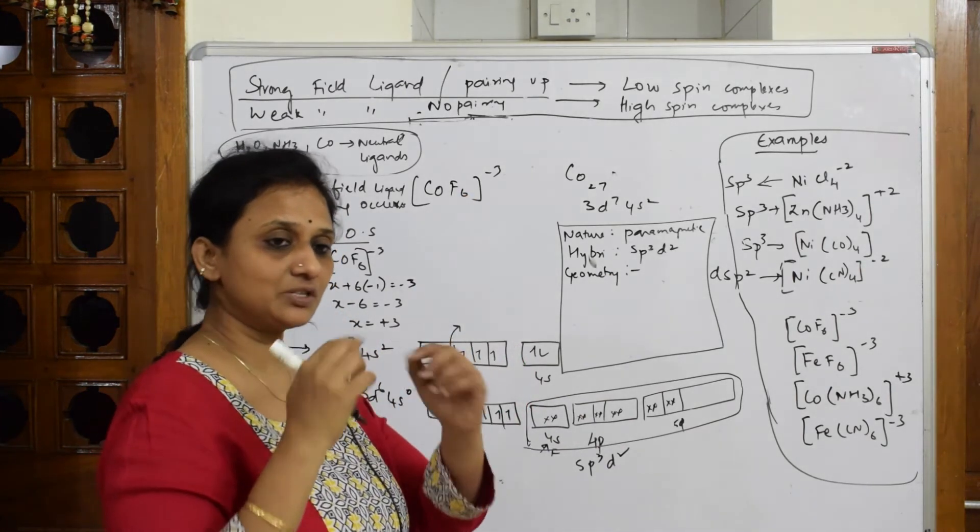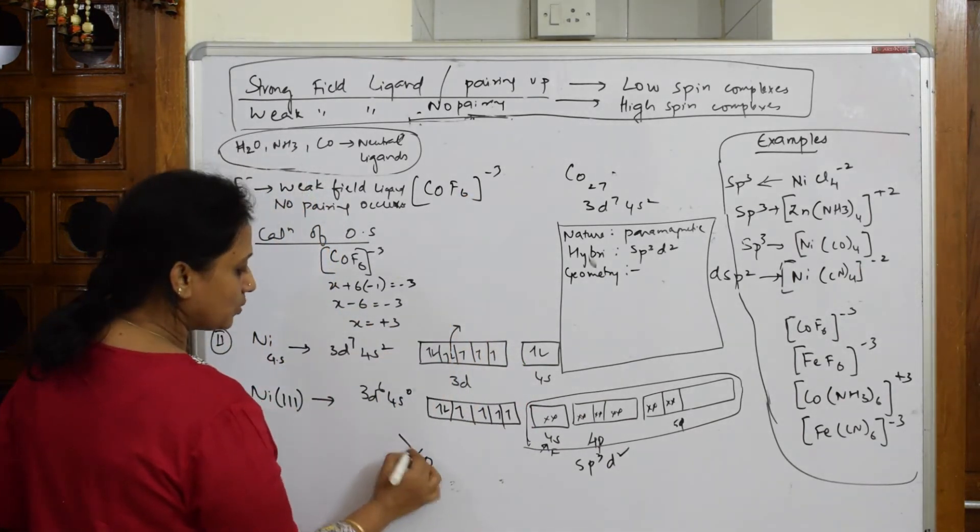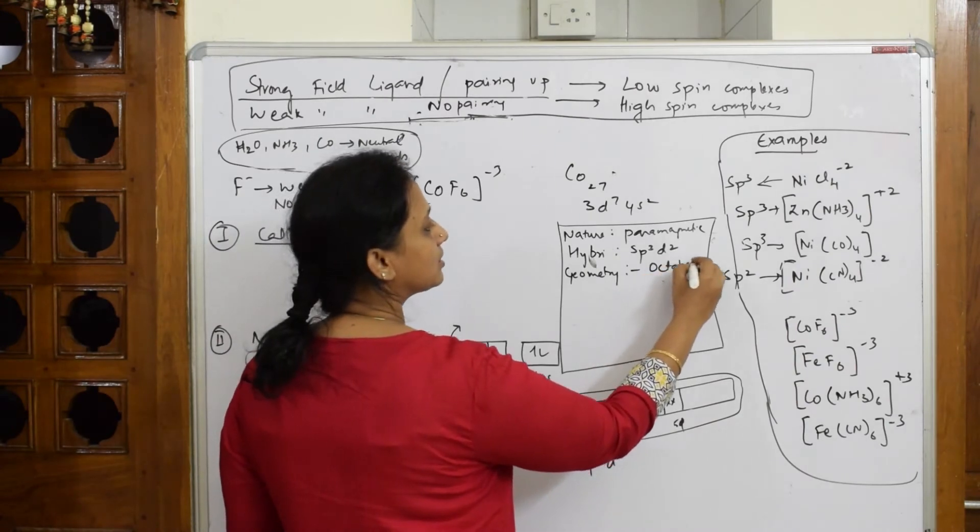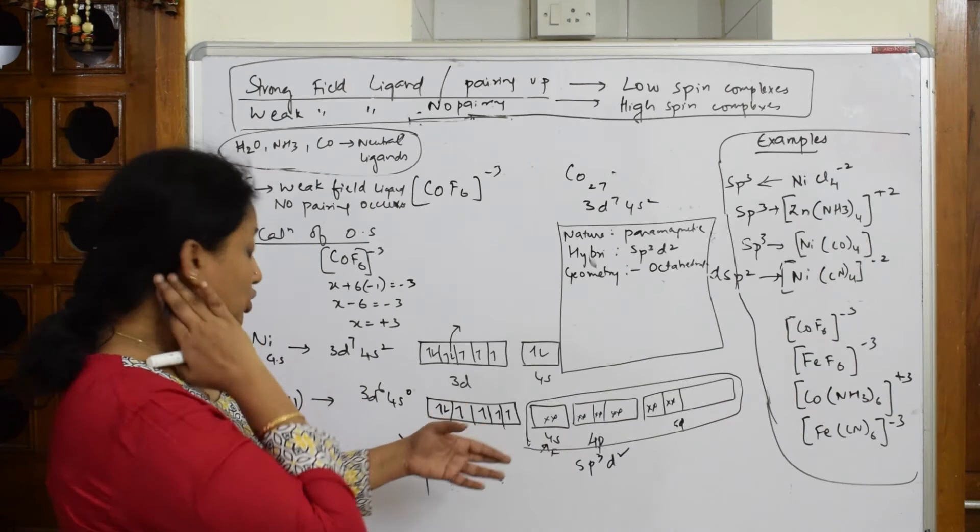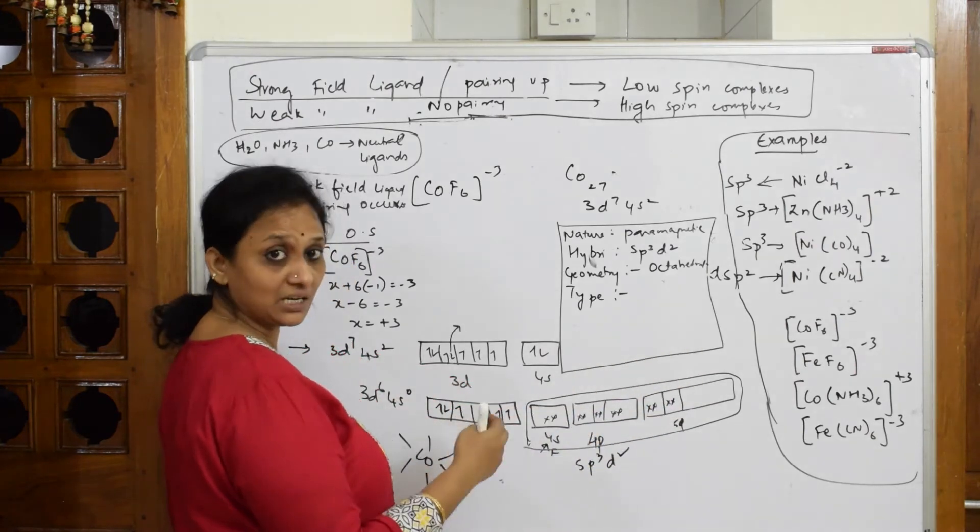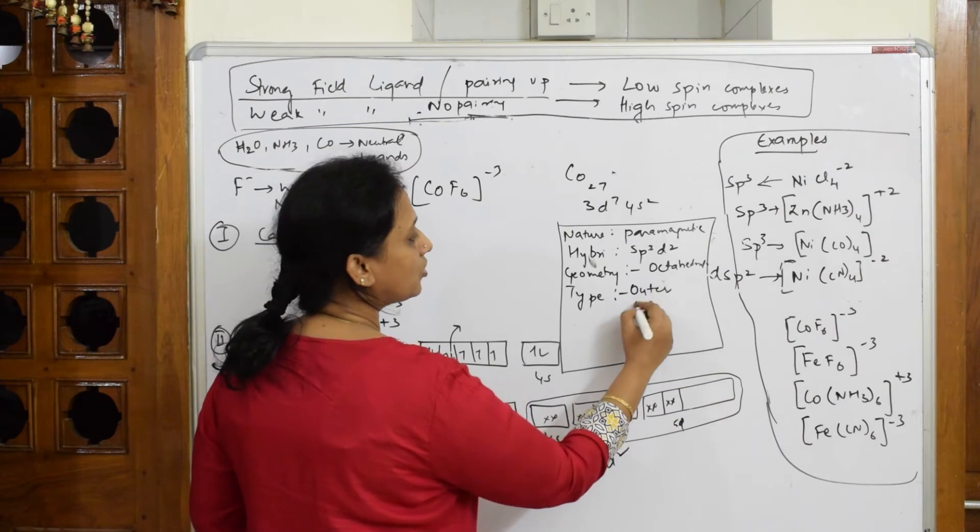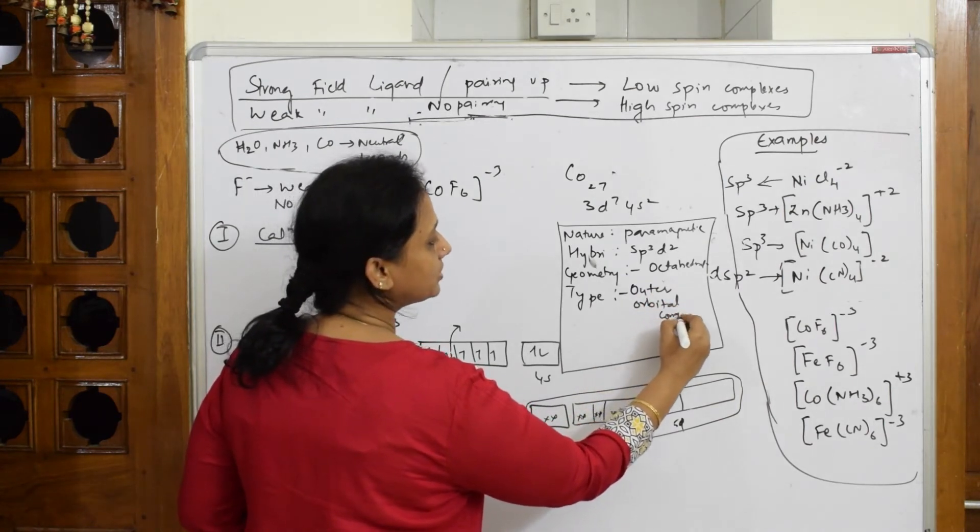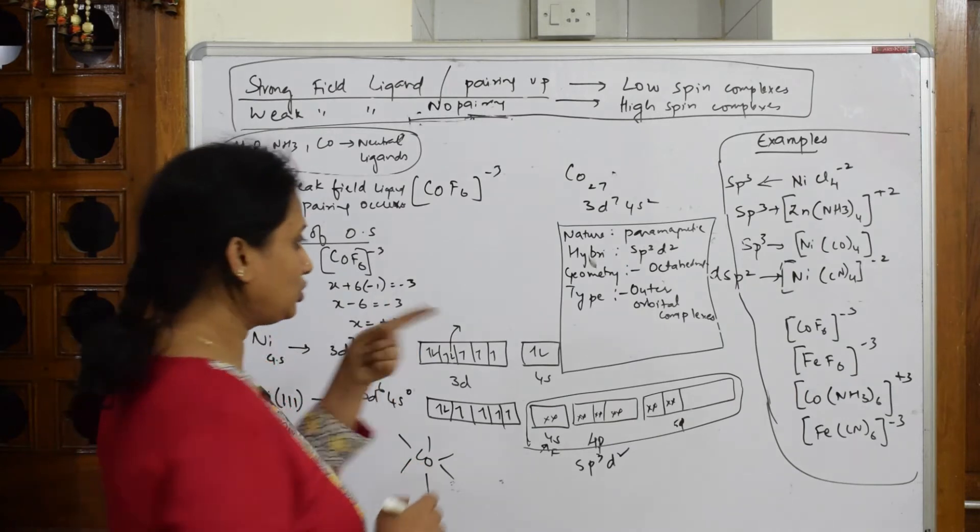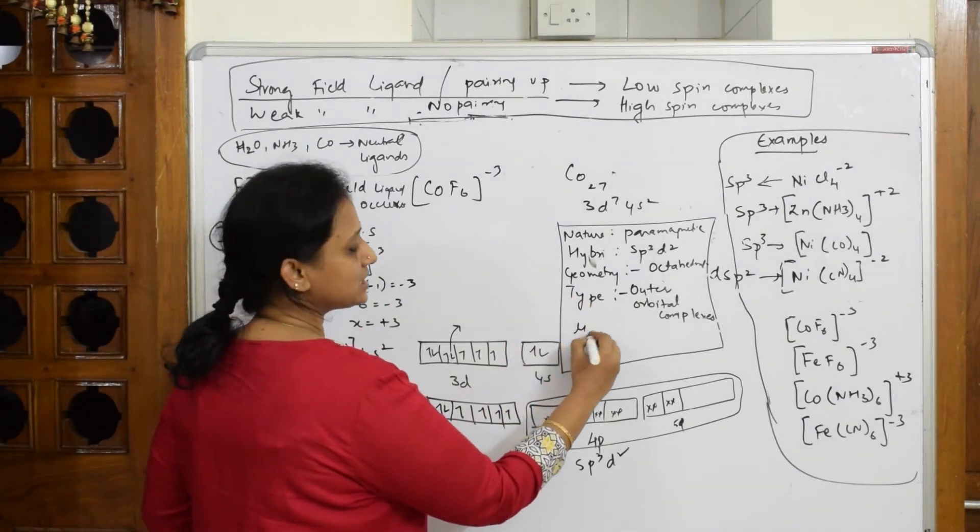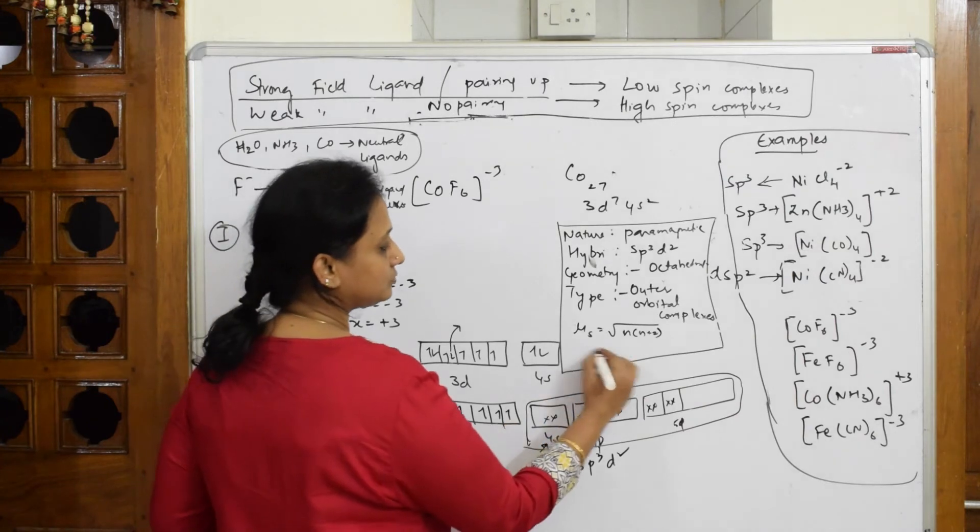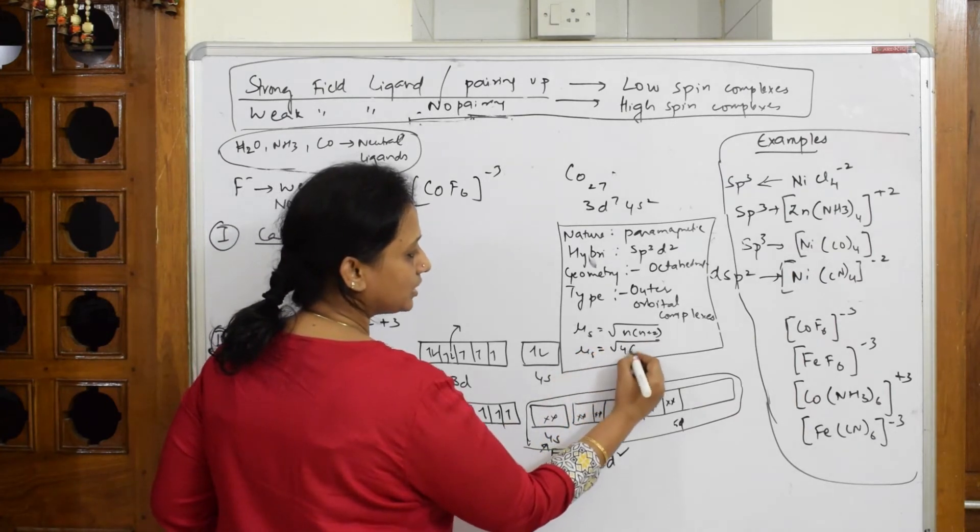Next important thing: what is the geometry? How many ligands are there? Six ligands. Six means all six corners, like 1, 2, 3, 4, 5, 6. What is this shape? Octahedral. So geometry is octahedral. Next important thing: type - inner orbital or outer orbital complexes. It's going out, isn't it? It's not coming and pairing up because it is a weak field. So this is outer orbital complexes. I have to calculate mu value. Everything is over. Mu s equals root n into n plus 2. Number of unpaired electrons: 1, 2, 3, 4.